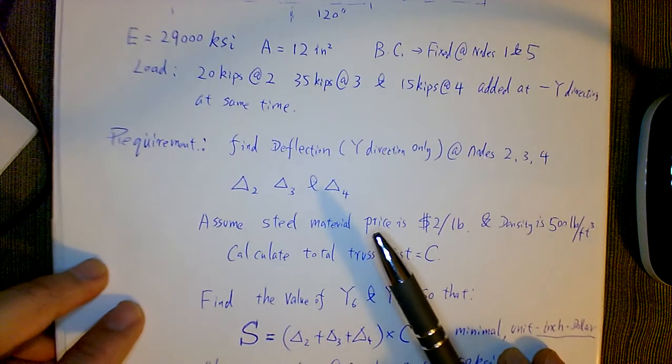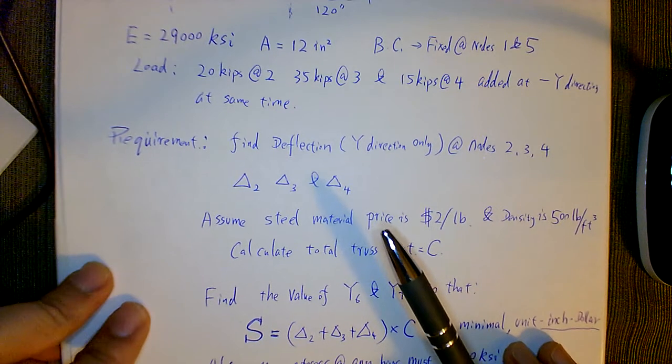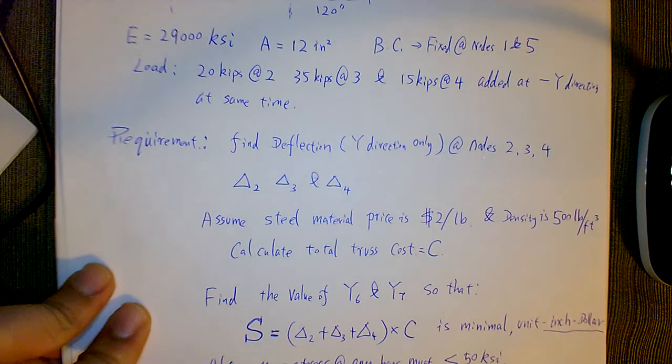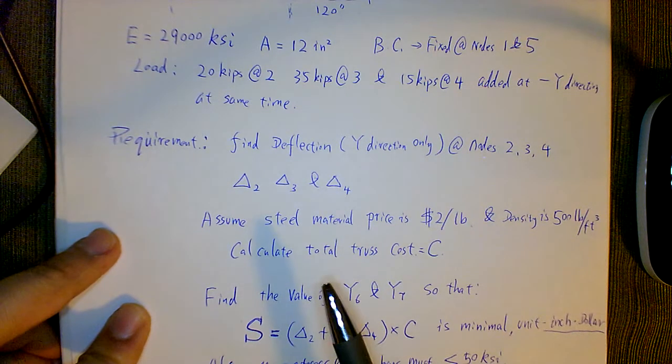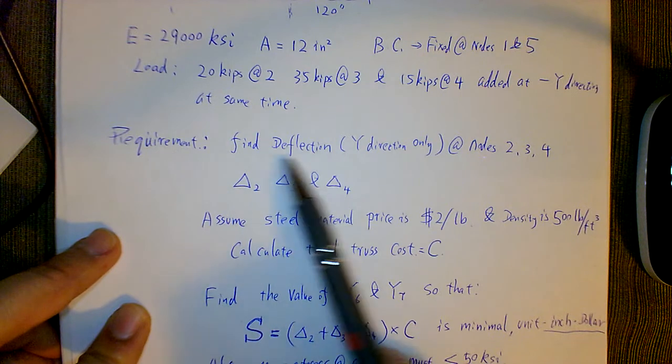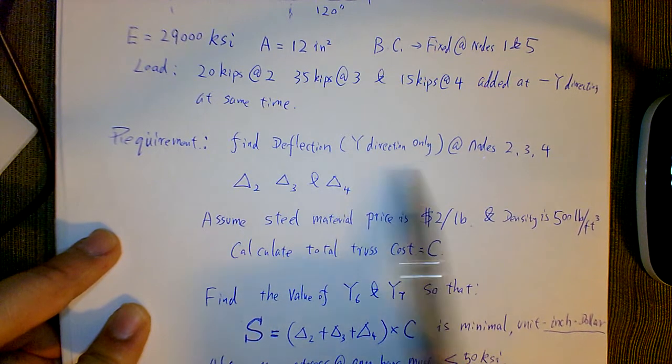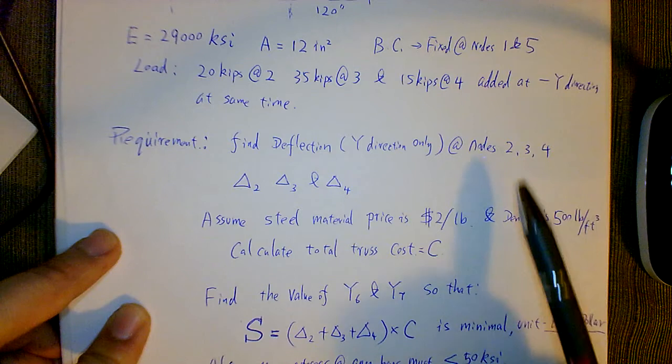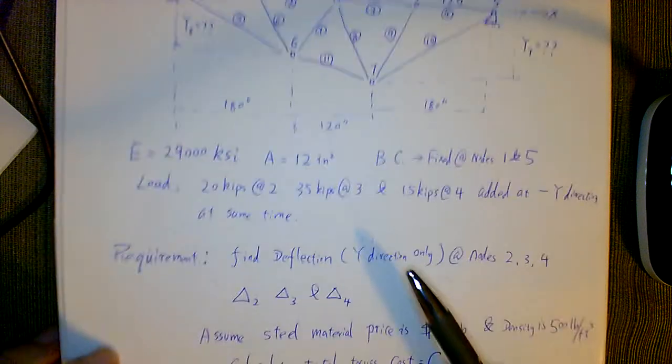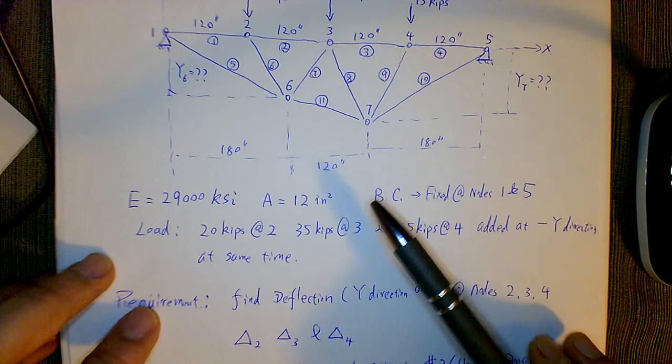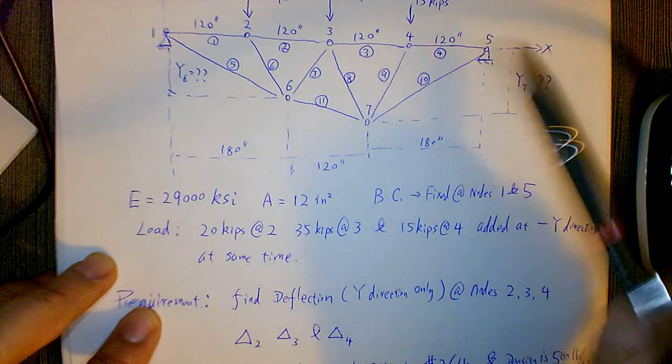So what's the requirement? Optimization and design is always like a check and balance. What you need to do is find the deflection, which is the vertical deflection only, at nodes 2, 3, and 4.